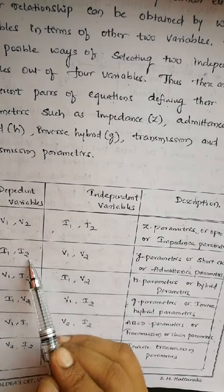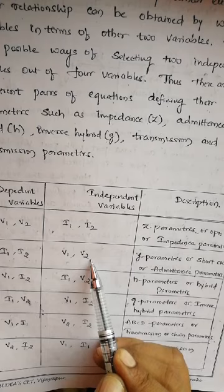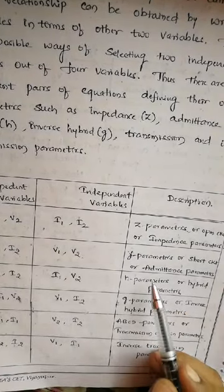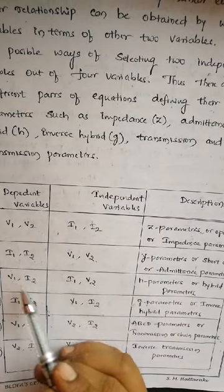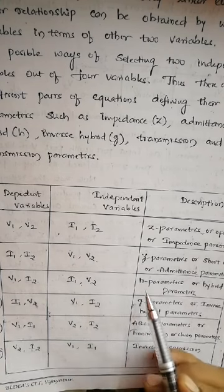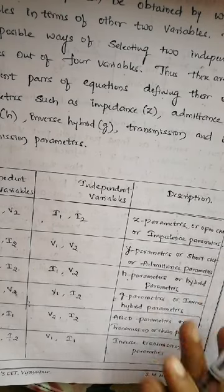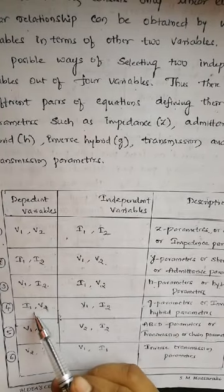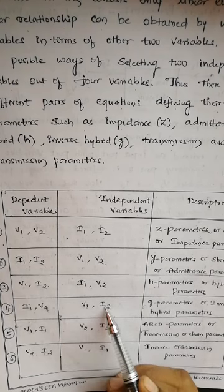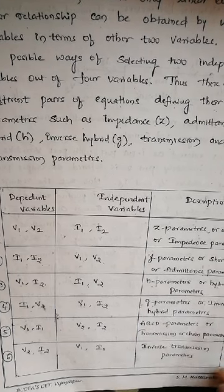If I1 and I2 are the dependent variables and V1 and V2 are the independent variables, those parameters are called Y parameters, or short-circuit admittance parameters. If V1 and I2 are the dependent variables and I1 and V2 are the independent variables, those parameters are called H parameters, or hybrid parameters. If I1 and V2 are the dependent variables and V1 and I2 are the independent variables, those parameters are called G parameters, or inverse hybrid parameters.